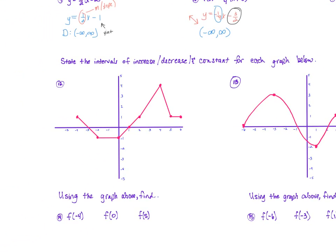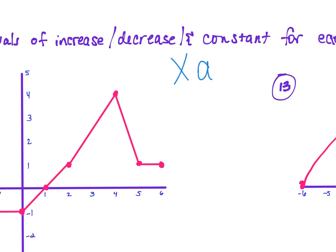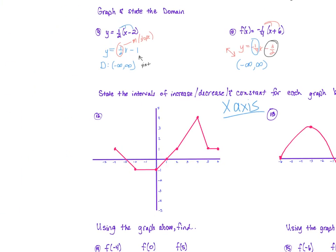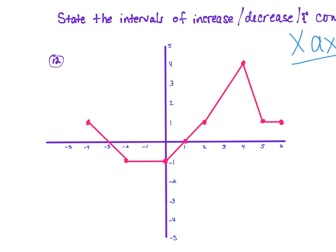For intervals of increase and decrease, the most important thing: you always look at the x-axis. The y-axis does not matter — just cross off the numbers on the y-axis so you don't even look. For intervals of increase, decrease, and constant, we always use parentheses because you cannot increase and decrease simultaneously.